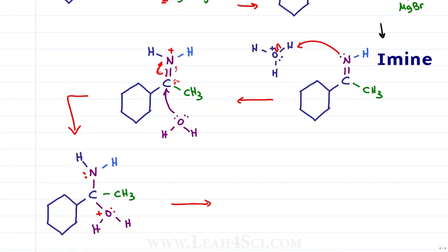For the next step we have a proton transfer which can be shown in two different ways. Some professors will allow you to show an internal proton transfer where the neutral nitrogen will grab a proton collapsing the electrons back onto oxygen. Other professors want you to show it in two distinct steps as follows.